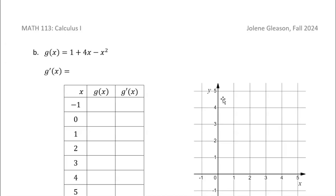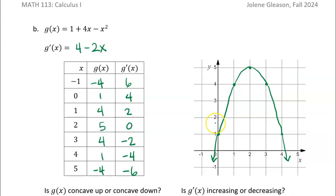Let's go ahead and do part B, which is just another quadratic. Taking the derivative: the derivative of the constant 1 is zero, so G prime of x equals 4 minus 2x. I filled out the table of values for G of x and for the derivative G prime of x, and plotted G of x.